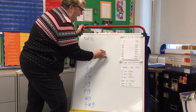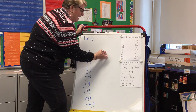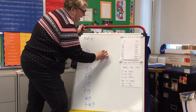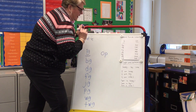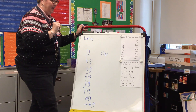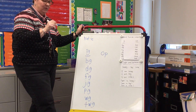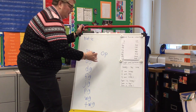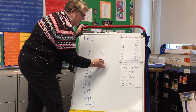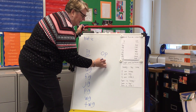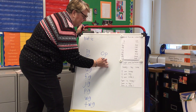Okay, and then we have 'op' — O like octopus, and P like pig. First sound: B. O like octopus, and P like pig.